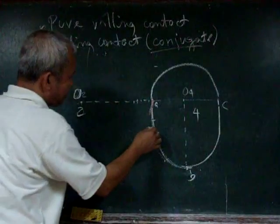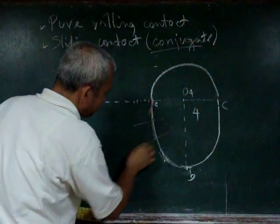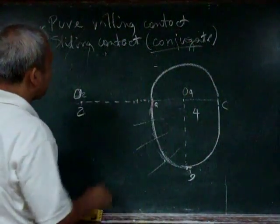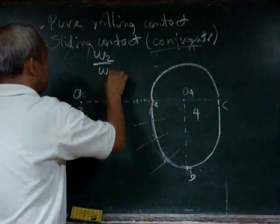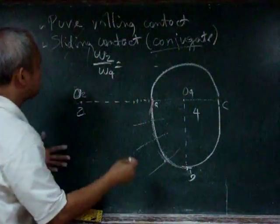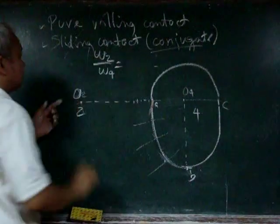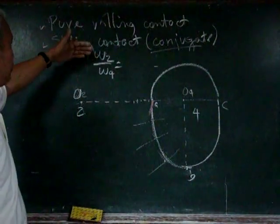So again, let us make use of these points. But this time, we have to determine, of course, we have to be specific with regards to our constant, our ratio omega 2 to omega 4, which must be constant.